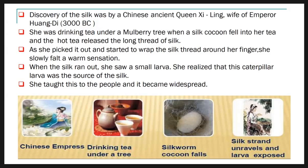The discovery of silk was first made in China by a Chinese ancient queen, Leiling Xi, wife of Emperor Hung Day, before 3000 BC. Once upon a time, she was drinking tea under a mulberry tree when a silk cocoon fell into her tea. The hot tea released a long thread of silk. As she picked it up and started to wrap the silk thread around her finger, she slowly felt a warm sensation. When the silk ran out, she saw a small larva — in present day we call it a pupa — and she realized that this caterpillar larva was the source of silk.